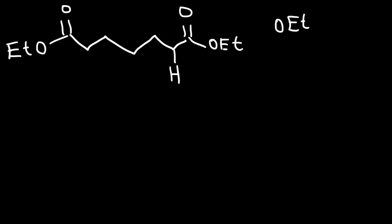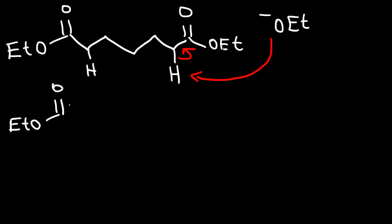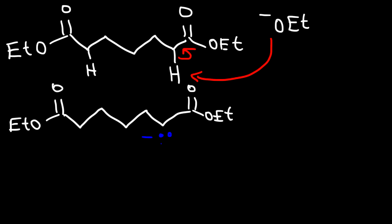The first thing that happens is we have a strong base — in this case ethoxide — and it's going to remove the alpha hydrogen. Now this particular molecule is symmetrical, so it really doesn't matter which of these two alpha hydrogens we remove. We're going to get the conjugate base, which is an enolate ion adjacent to an ester.